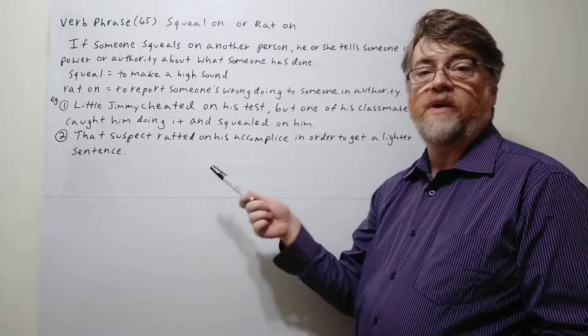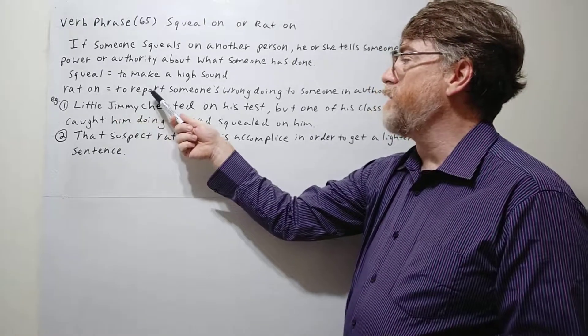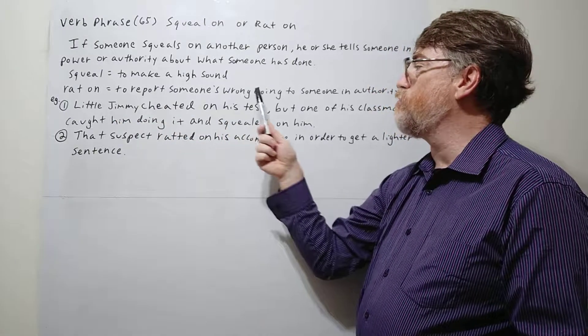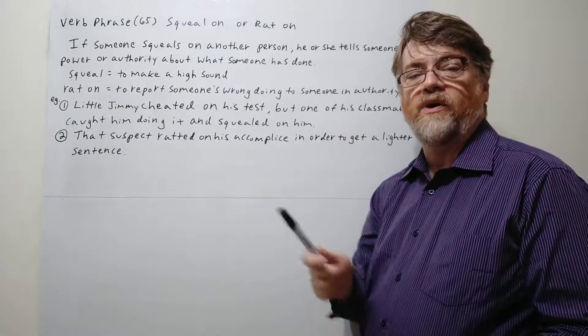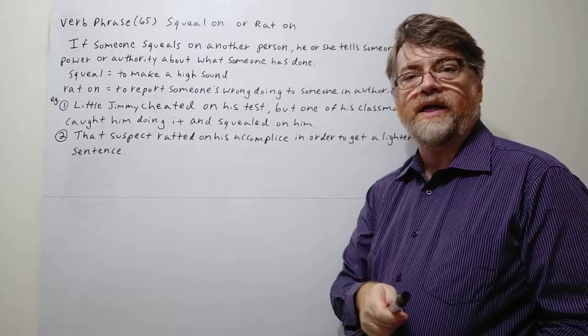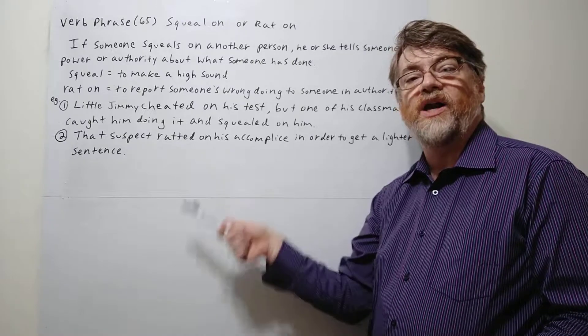So that's why when we say rat on, rat on also means to report someone's wrongdoing to someone in authority. We see this in the movies a lot. We often use rat on like maybe a criminal will rat on another criminal.